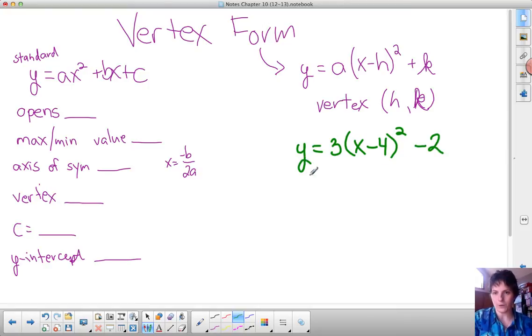This a value is the exact same. This a value here and this a value here have the exact same job, they're the exact same number. So we know that this parabola opens up because a is positive.